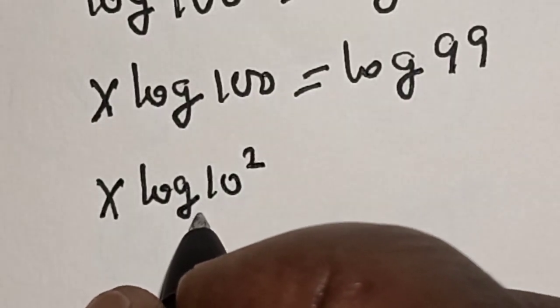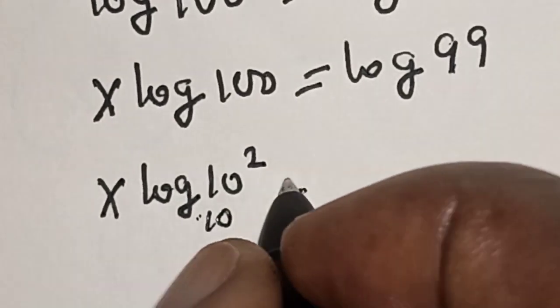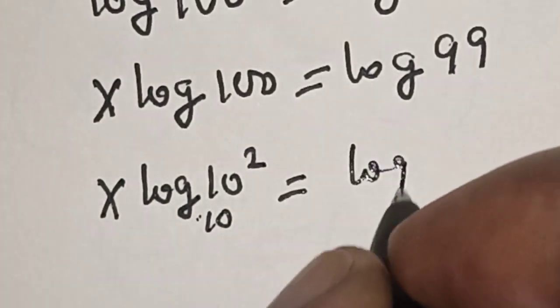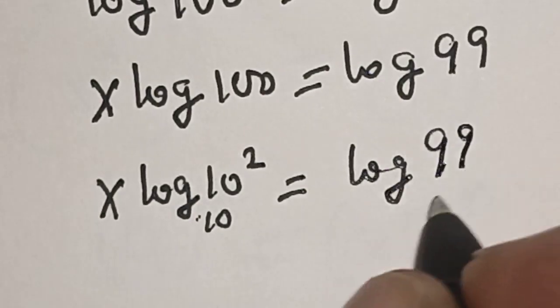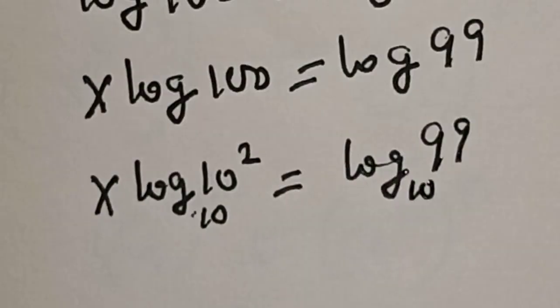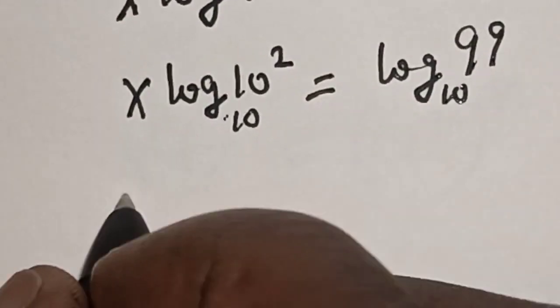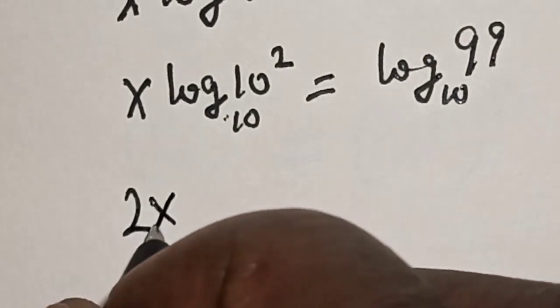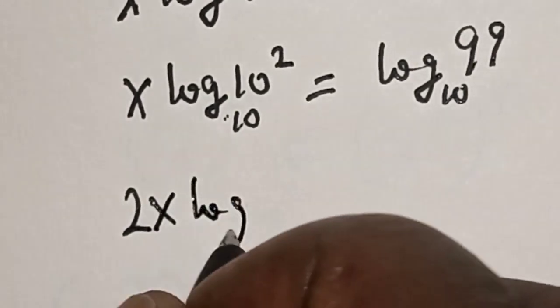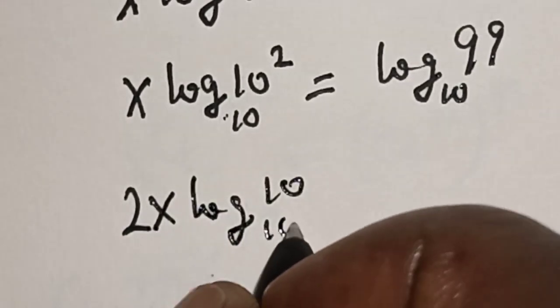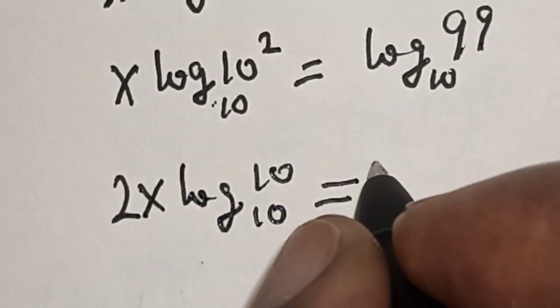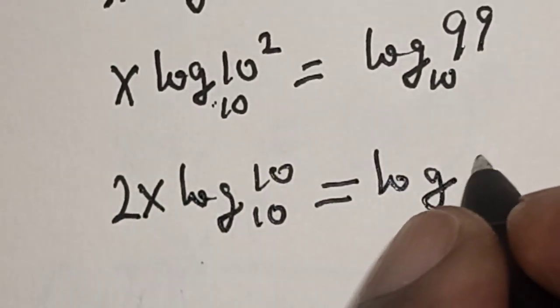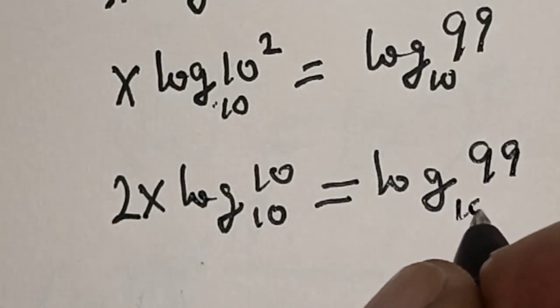Then x log base 10 of 10 squared is equal to log 99 base 10. This is 2x log 10 base 10 is equal to log 99 base 10.